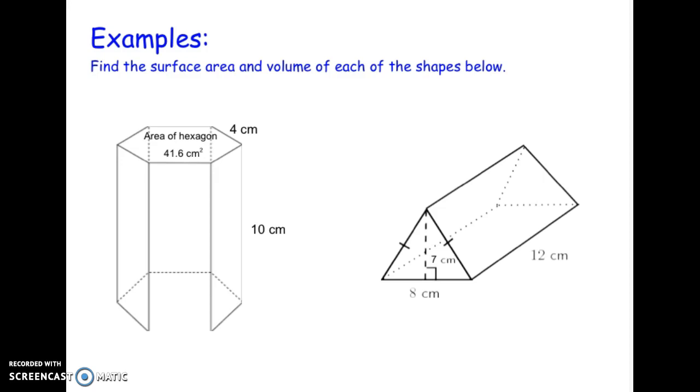So for this, first of all, it's another hexagonal prism. To find the volume, I'm going to do the area of the base times the height. The area of this base is 41.6 square centimeters. The height is 10. So I'm going to multiply these and I should get a volume of 416 cubic centimeters.